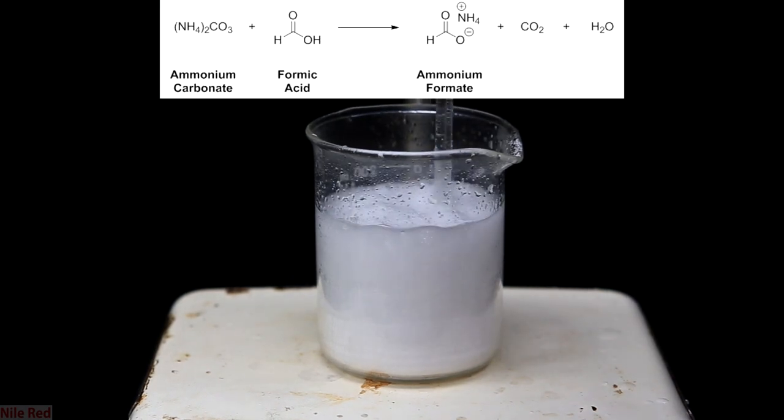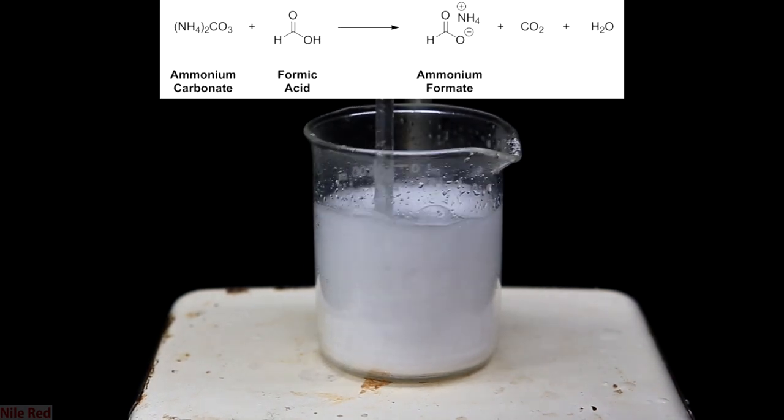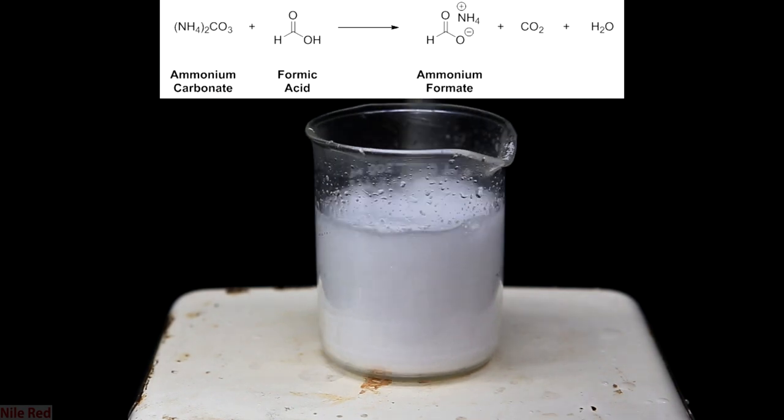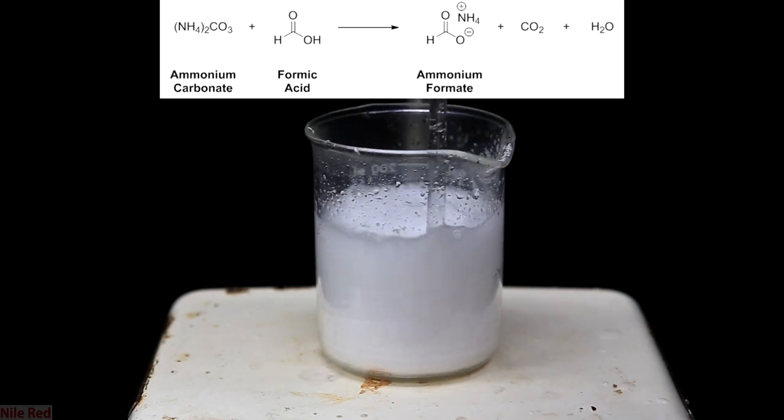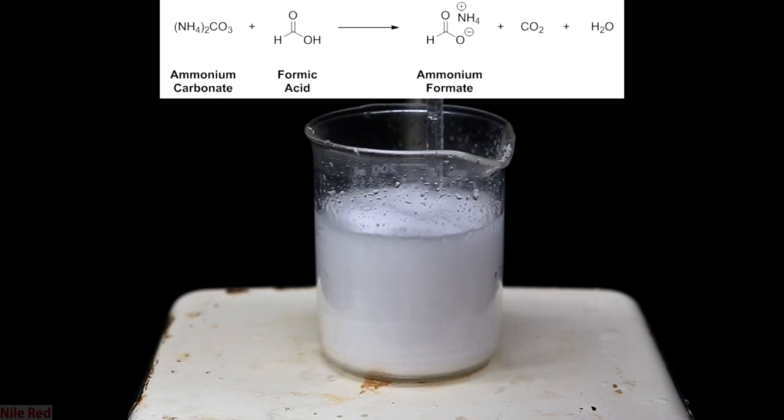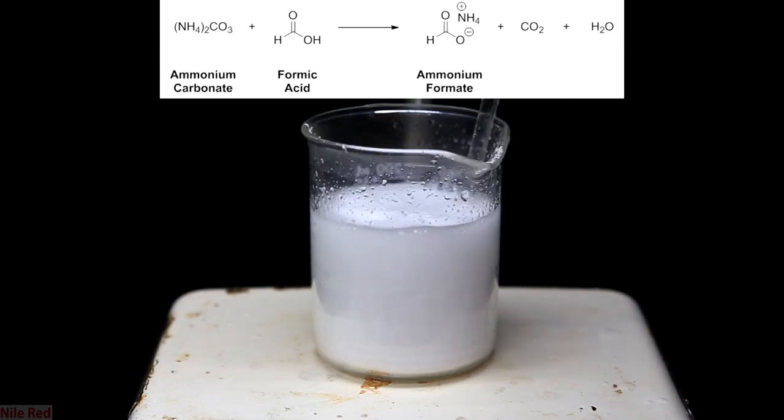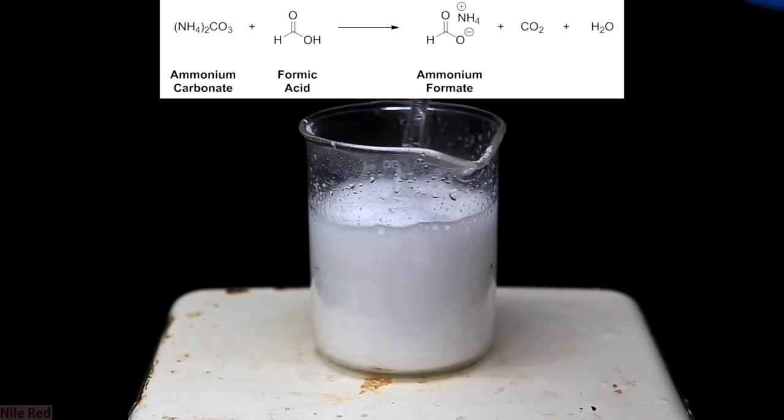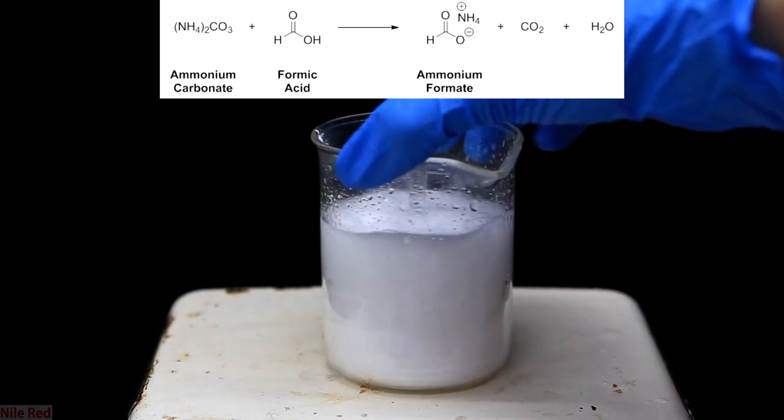What we're doing here is a neutralization reaction where ammonium carbonate is reacting with formic acid to produce ammonium formate, CO2, and water. The ammonium formate, when it's produced, dissolves into the water because it's extremely soluble, but the CO2 escapes as a gas.